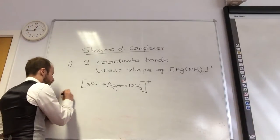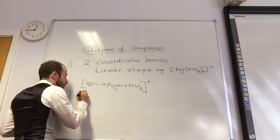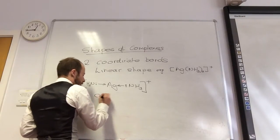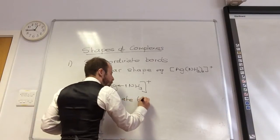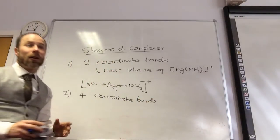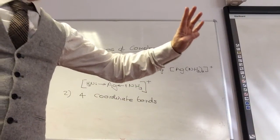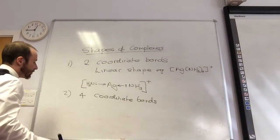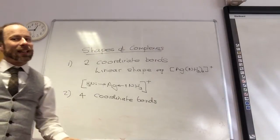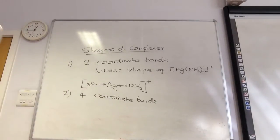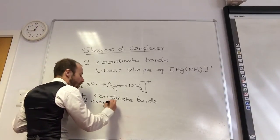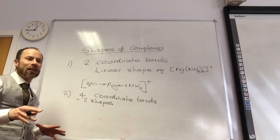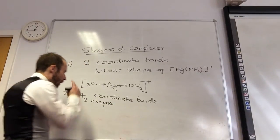Let's do four coordinate bonds — what shape is it going to be? Four bonded pairs — tetrahedral. It can actually also form square planar as well. So four coordinate bonds can give two shapes. You only need to know a couple of examples as to which one does what, and I'm going to do both.